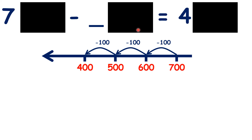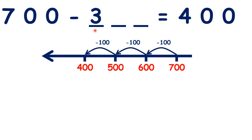Missing number problems with multiples of 100 are really just as easy as our usual missing number problems. If we ignore our tens and units, we have 7 minus something equals 4. You probably know that 7 minus 3 equals 4, but we can't just write 3, because 700 minus 3 is 697, not 400. So we need two zeros after the 3 to show that we're subtracting three hundreds, not just 3.